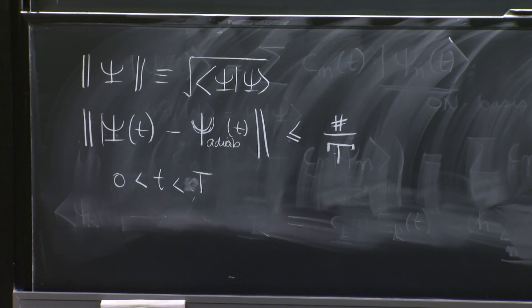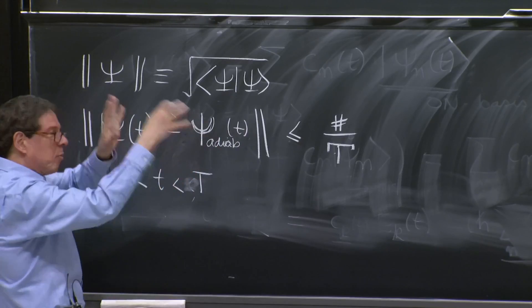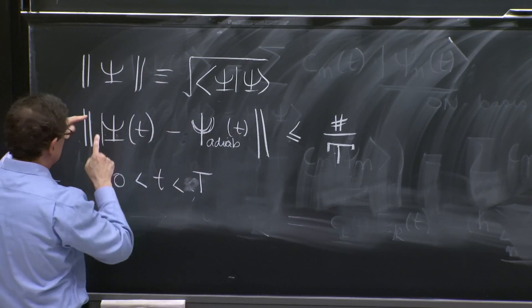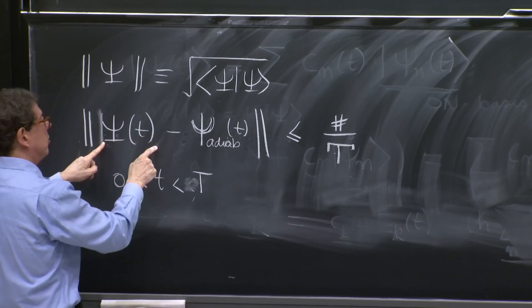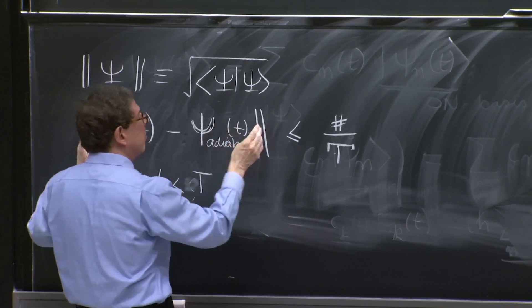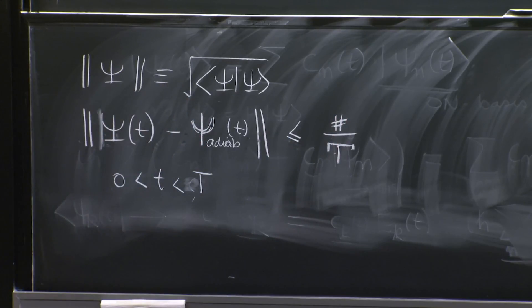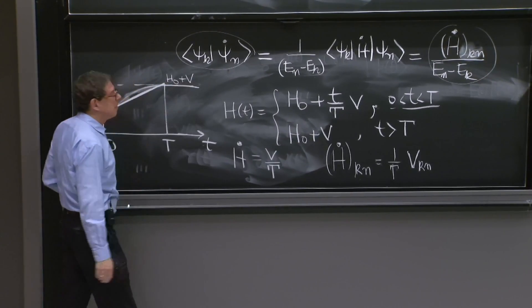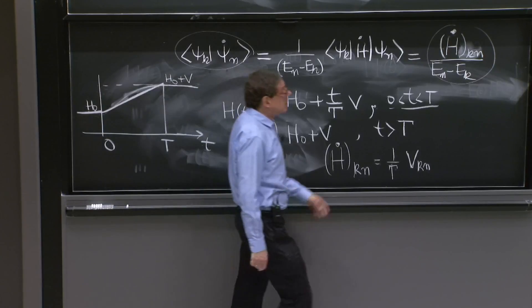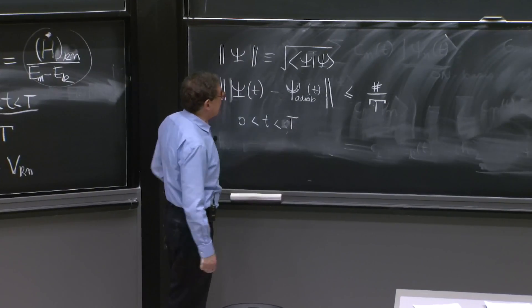the difference between the true state psi of t and the adiabatic approximation t for t between 0 and t is less than or equal than a number times t. So the adiabatic approximation that we've written, the state with all these phases, is as close to the real Schrodinger equation solution, the error is less than 1 over t.